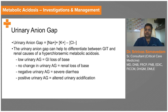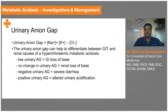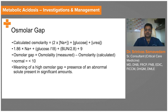If the urinary anion gap is low, there is a GI loss. If there is no change in the urinary anion gap, it is a renal loss of base. If the urinary anion gap is negative, you are looking at severe diarrhea. If it is very high, it is due to altered urinary acidification, which is uncommon in an intensive care patient.